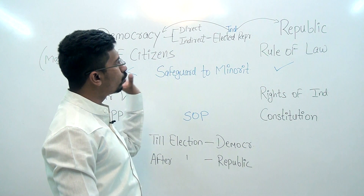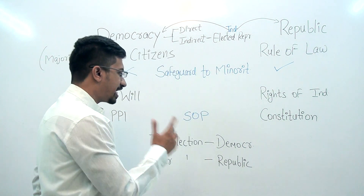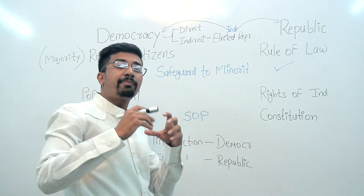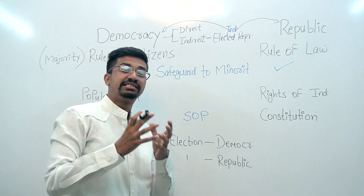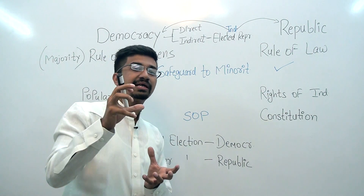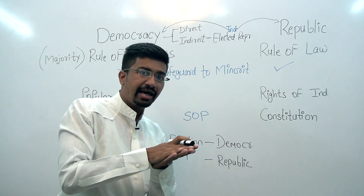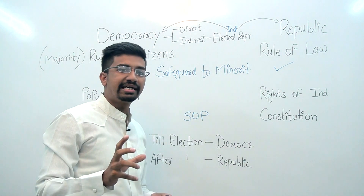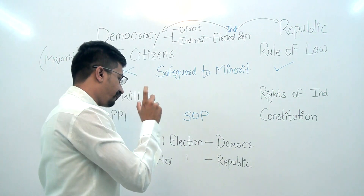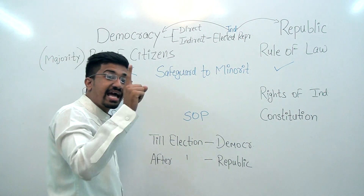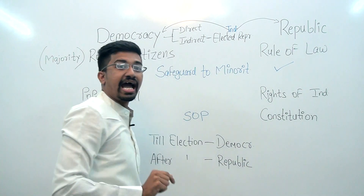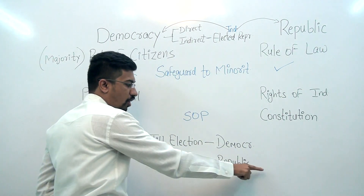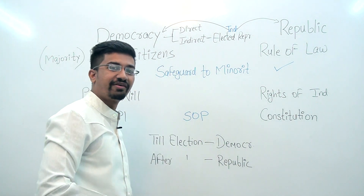In this way, friends, the democratic republic form of governance system works. To summarize with one complete example: democracy is operative when we elect our representatives — as long as representatives are being elected and sit in their seats, that system is called democracy. While after the election, they have to abide by rule of law — and so after the election, we would be called a republic, or a republican form of government.